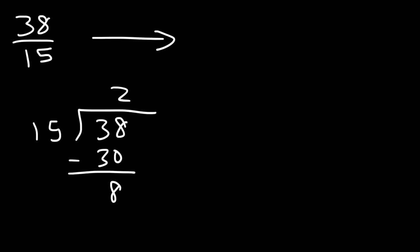So our final answer as a mixed number is going to be 2 and then we have an 8, and on the bottom we have a 15. So that's it. 2 and 8 over 15.